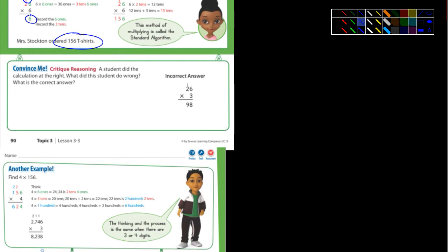The convince me, it says, the student did the calculation at the right. What did the student do wrong? Take a look at that. For 20 points, I want to know what the student did wrong. Take a look at it. And sometimes the best way to figure out what a student did wrong is to do it yourself. 26 times 3.